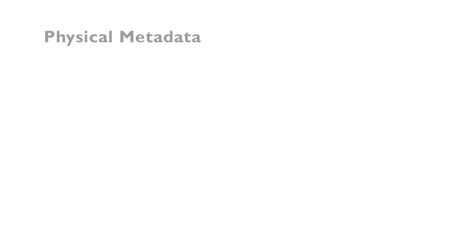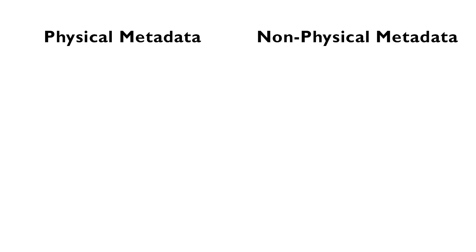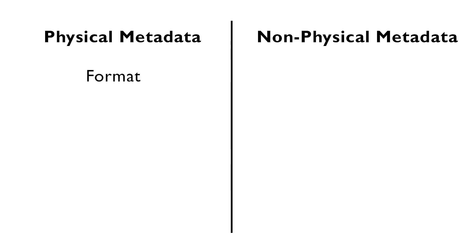So how do we describe a book? Generally, there are two categories that a descriptor can fall into: physical and not physical. That is, you can describe the book as an object, and you can describe the body of information contained within it. Physical descriptors might include, for example, its format — so whether it's hardcover, paperback, or an ebook or audiobook.